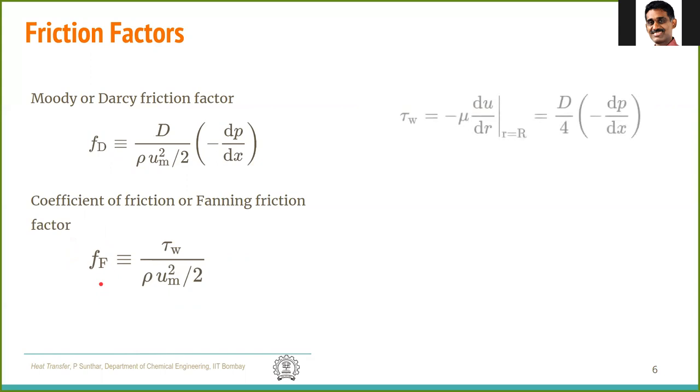Both are equivalent. If you see that fF, which is τw by half ρu squared, τw is the shear stress at the wall, which is minus μ times du by dr, and this by substituting the expression for parabolic velocity profile, we get it as D by 4 minus dP by dx. Substituting this here, we can find the relationship between fF and fD, which is Darcy friction factor or Moody friction factor, is 4 times the Fanning friction factor.